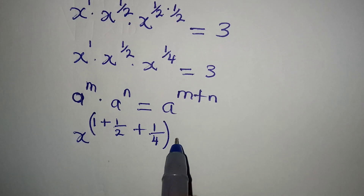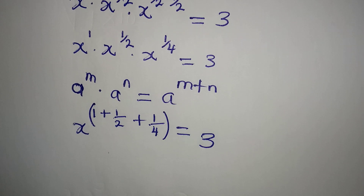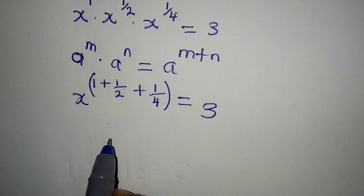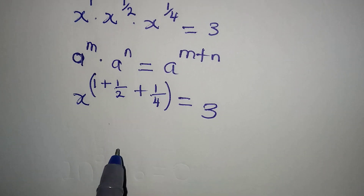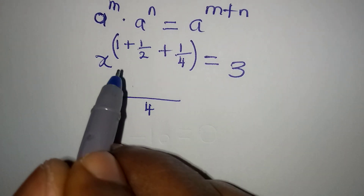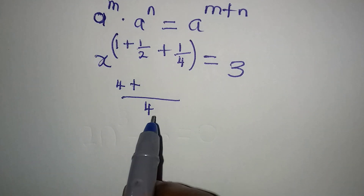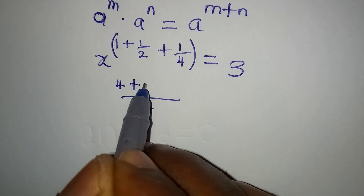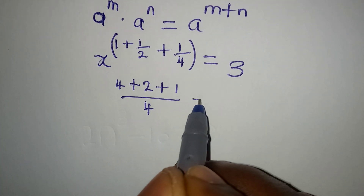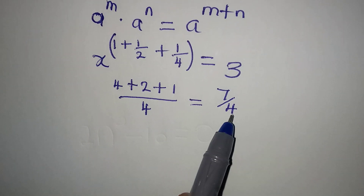Remember, everything here is the power of x, and this is equal to 3. Now I want to work out this power. The LCM is 4, so multiply 4 by 1 to get 4, plus 4 divided by 2 is 2 times 1 is 2, plus 4 divided by 4 is 1 times 1 is 1. This gives us 7 over 4 for the power.